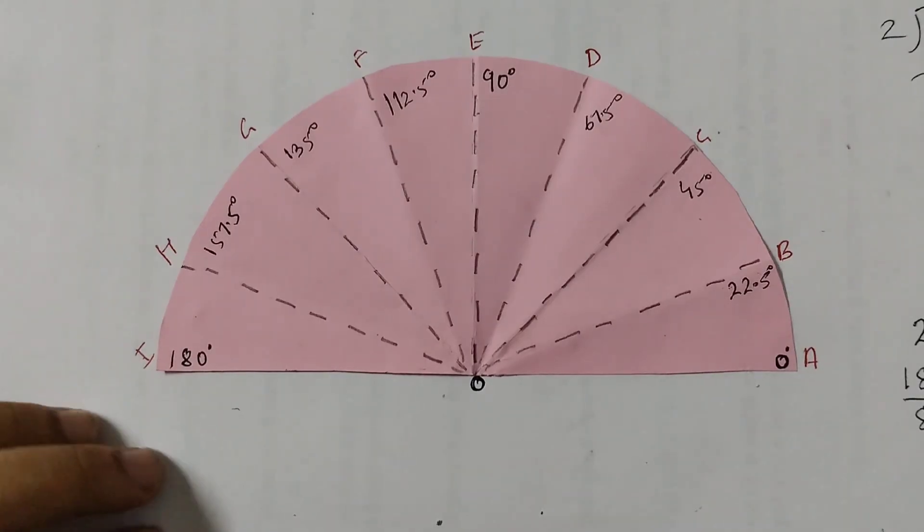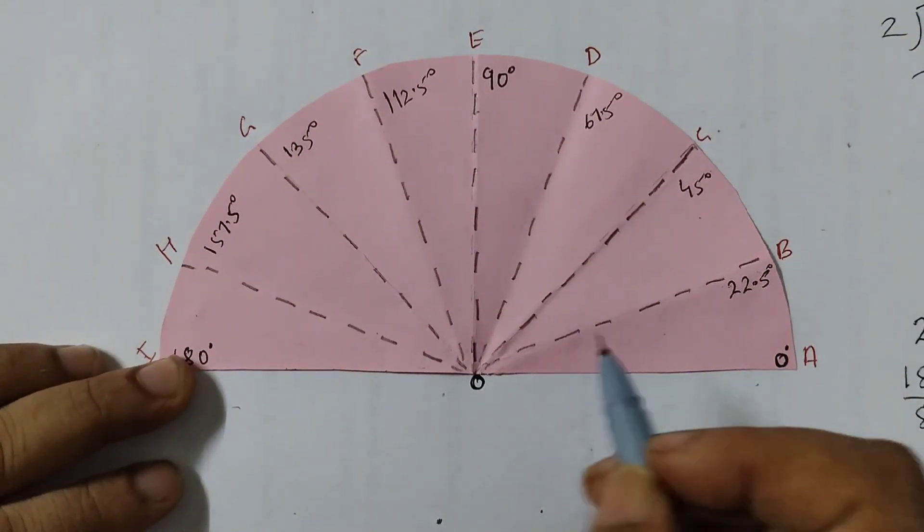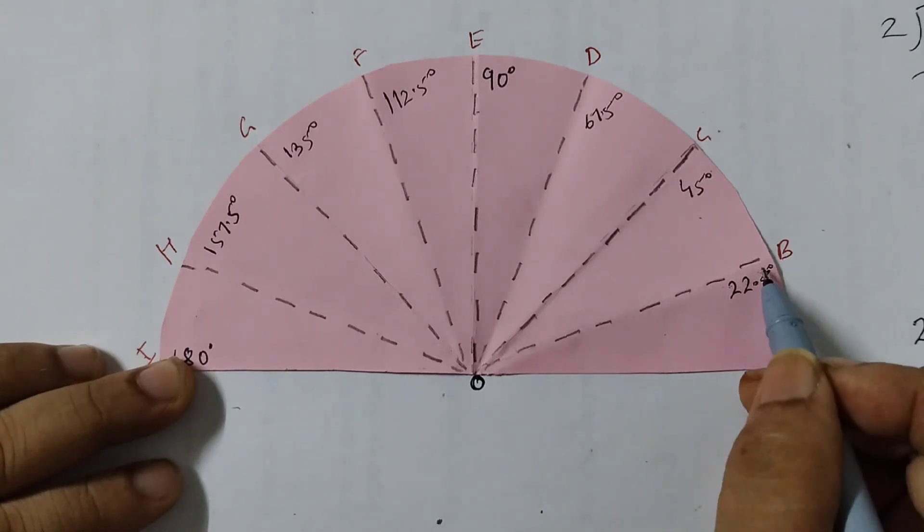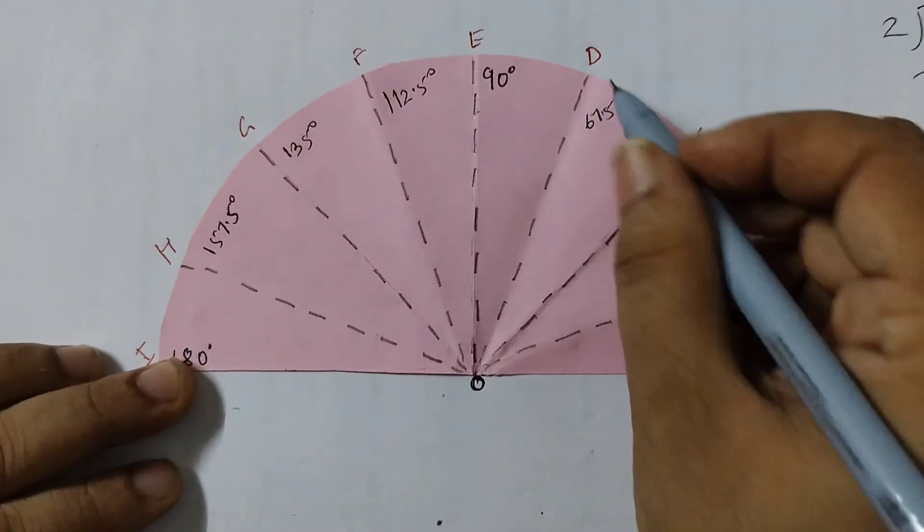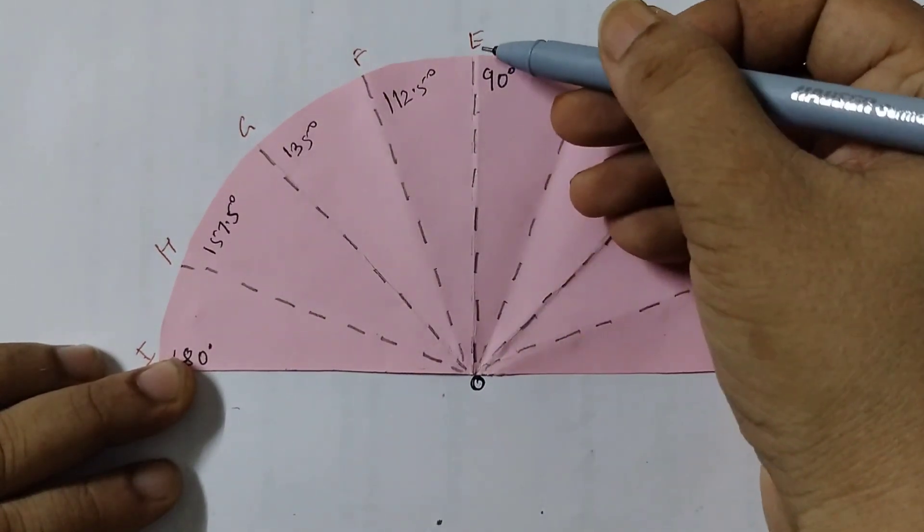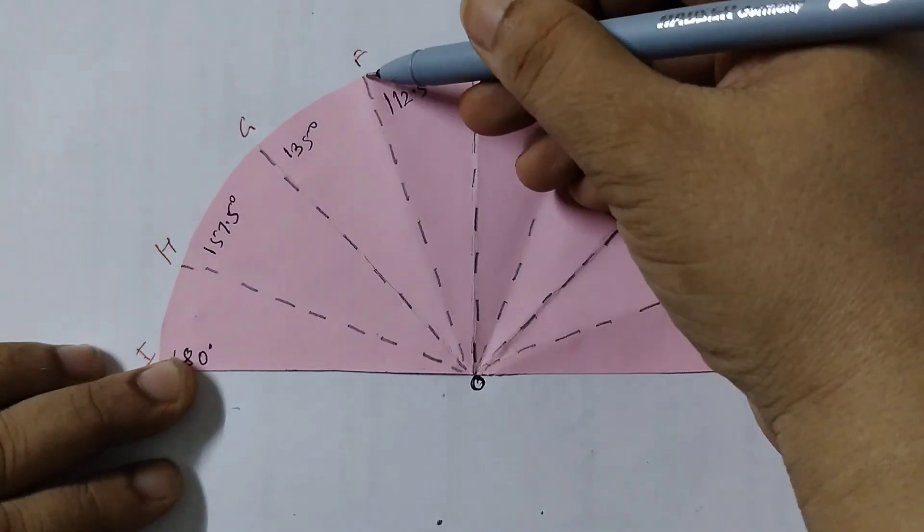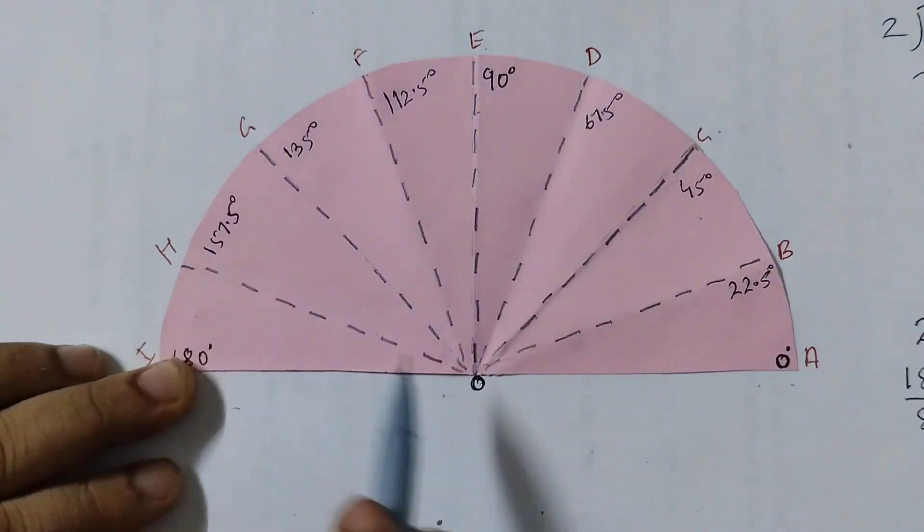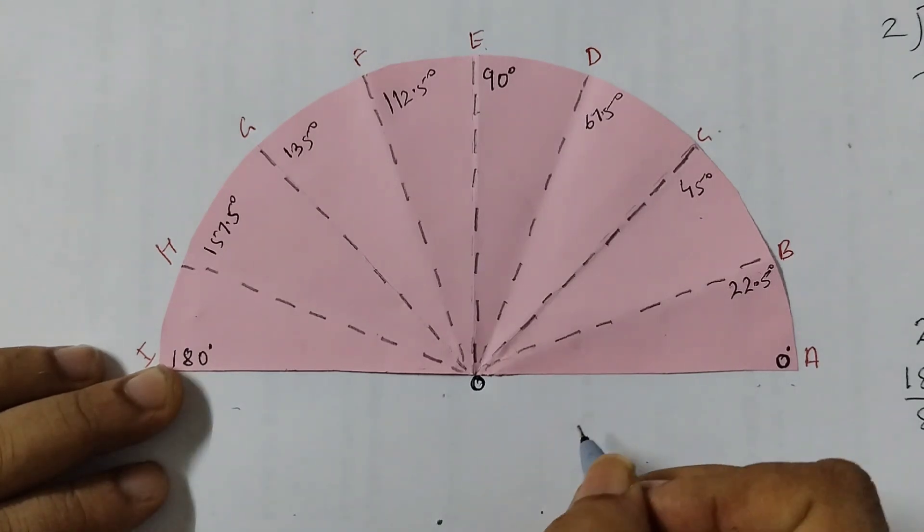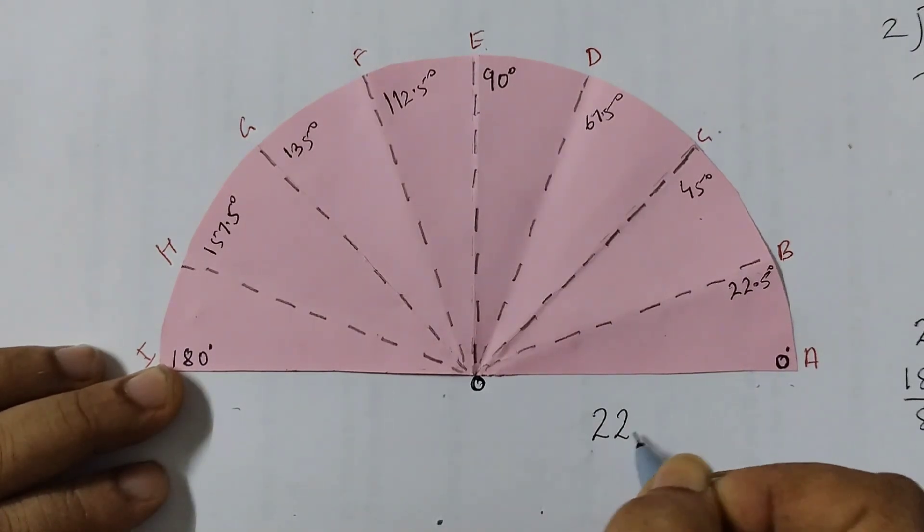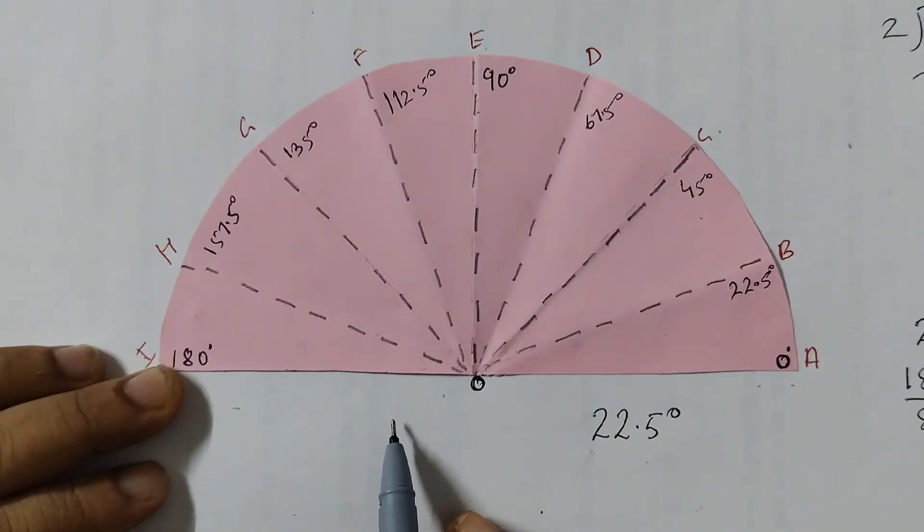So this is our paper protractor and here we get 8 angles: angle AOB, BOC, COD, DOE, EOF, FOG, GOH, HOI. And what is the measure of these angles? The measure is 22.5 degrees. All of these angles measure 22.5 degrees.